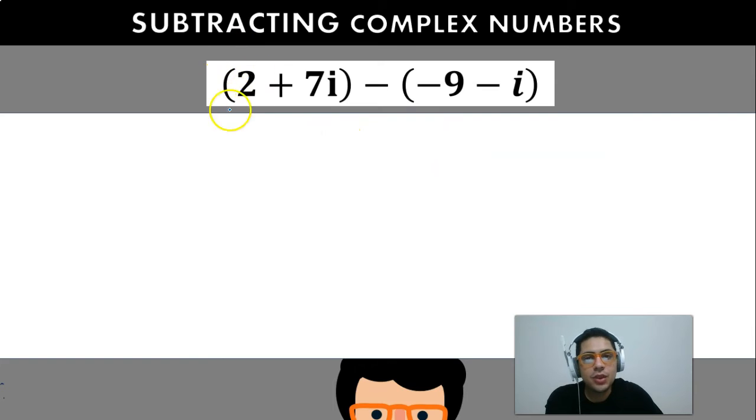We're actually going to do the same thing here. So let's try solving the problem. We have (2 + 7i) minus (−9 − i). What we're going to do is write down the first one the same, and then we have negative multiplying the whole parenthesis. So negative by negative 9 is going to be plus 9, negative times negative i is going to be plus i.